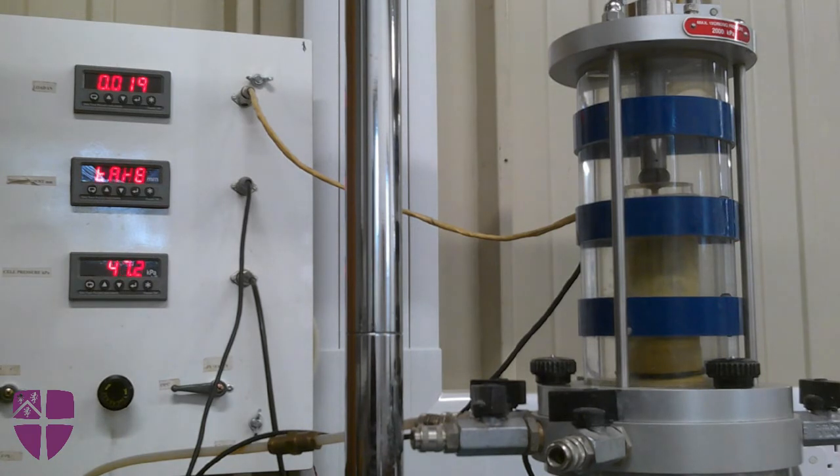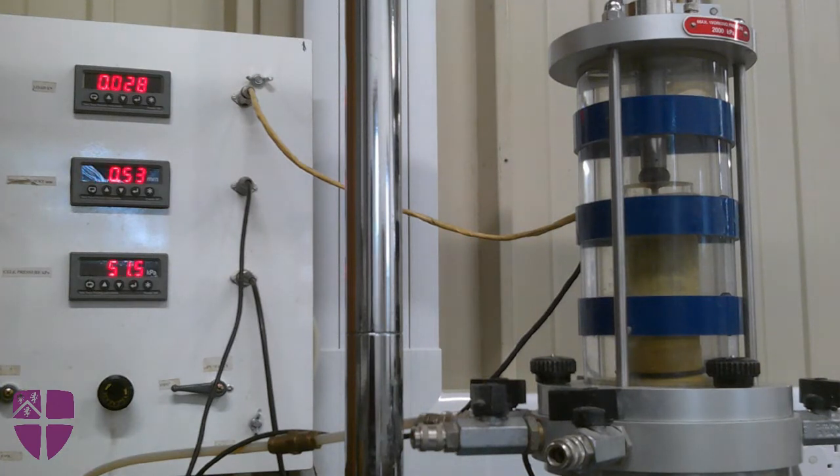The shearing stage of the test is fast forwarded. The test is finished when an axial strain of 20% is reached or until the sample fails completely. Once the test is completed, press the stop button on the triaxial rig.